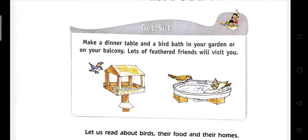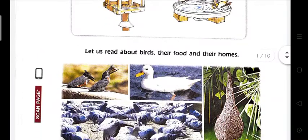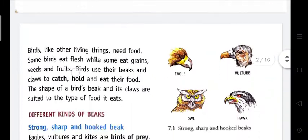Make a dinner table and a bird bath in your garden or on your balcony. Lots of feathered birds will visit you. A dinner table means a place of food for birds, or a bird bath in your balcony or garden. You can see many birds will come to the dinner table or the bird bath. Let us read about birds and their food and their homes.